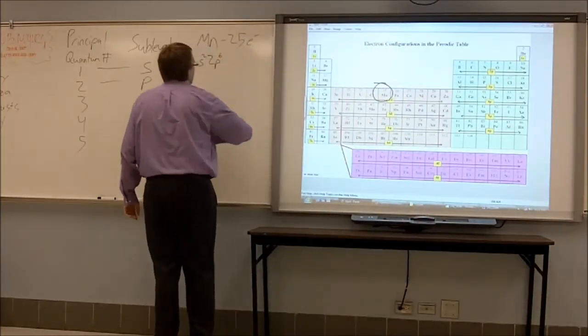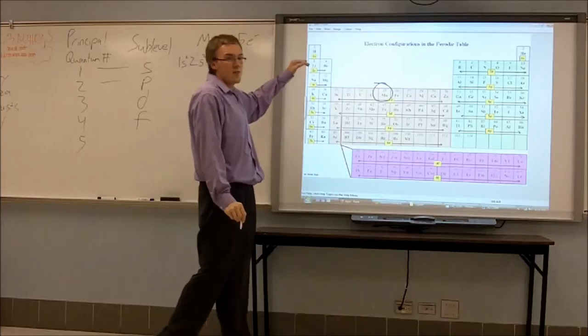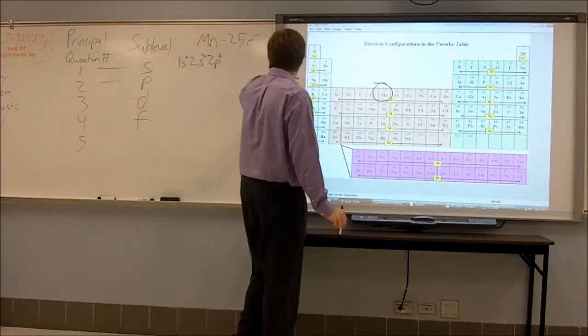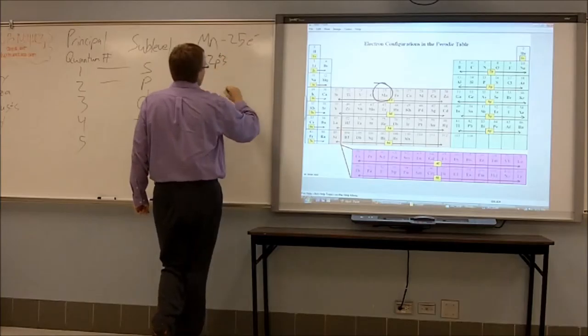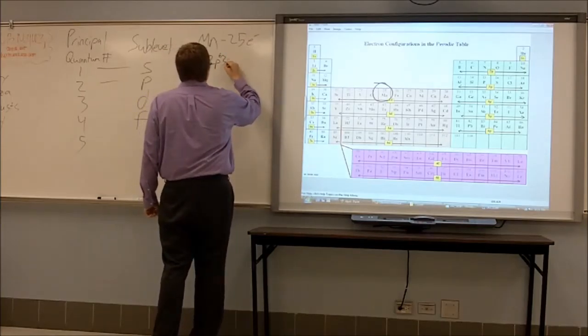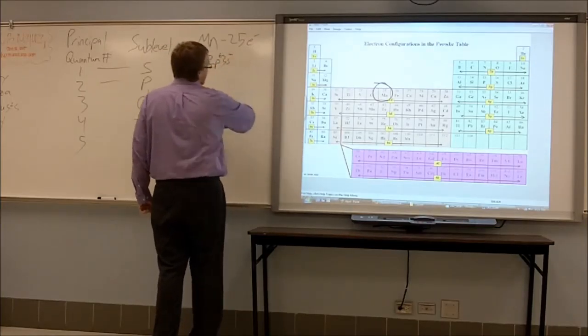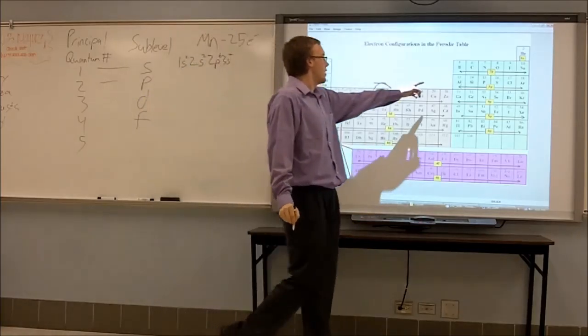And to know how many electrons are able to fit in the P sub-level, we are going to count. We have one, two, three, four, five, six electrons in the P sub-level. Now we are going to move down and over to the left, start over again.